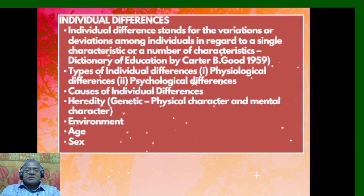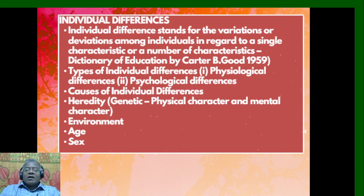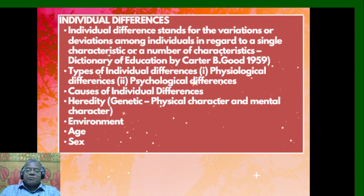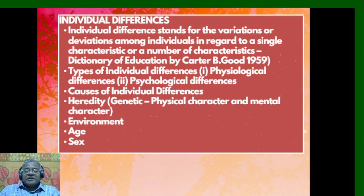What are Individual Differences? Individual Differences stand for the variations and deviations among individuals in regard to a single characteristic or a number of characteristics, according to the Dictionary of Education by Carter B. Goethe. There are two types: Physiological Differences and Psychological Differences. The causes of Individual Differences include Heredity — the genetic part involving physical and mineral characters from genes — as well as Environment, Age, and Sex.